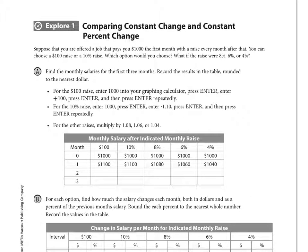The first problem says we're getting a raise. Find the monthly salaries based on a hundred-dollar raise per month or a ten percent raise — you choose. One might be better than the other. If you're comparing percents, you want the biggest one, so choose the ten percent raise. But when comparing a hundred dollars per month versus a ten percent raise, those are two different things. Since it's a raise, you're increasing your base amount by 0.1.